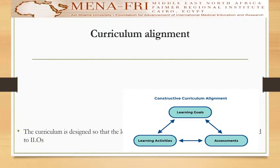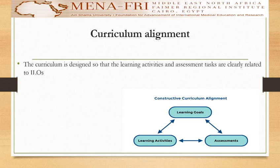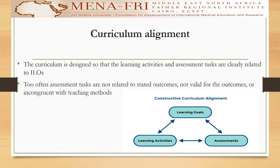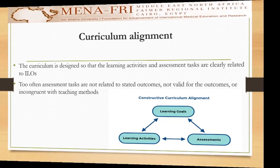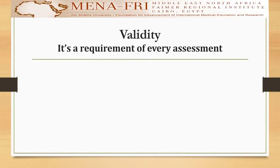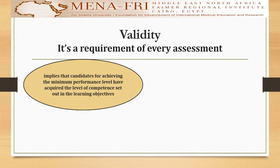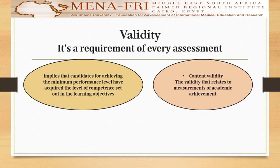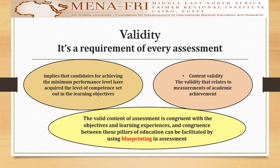If you look at curriculum alignment, the curriculum is designed so that the learning activities and assessment tasks are clearly related to the intended learning outcomes (ILOs). Too often, assessment tasks are not related to stated outcomes, not valid for the outcome, or not concurrent with the teaching methods. Validity is a requirement for every assessment, implying that candidates achieving the minimum performance level have acquired the level of content set in the learning objectives. Content validity relates to the measurement of academic achievement, and congruence between the pillars of education can be facilitated by using blueprinting in assessment. And this is where our blueprinting journey starts.